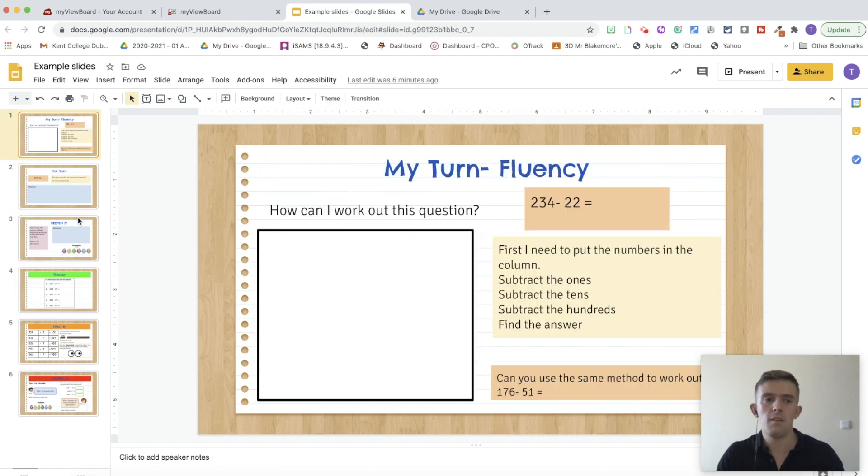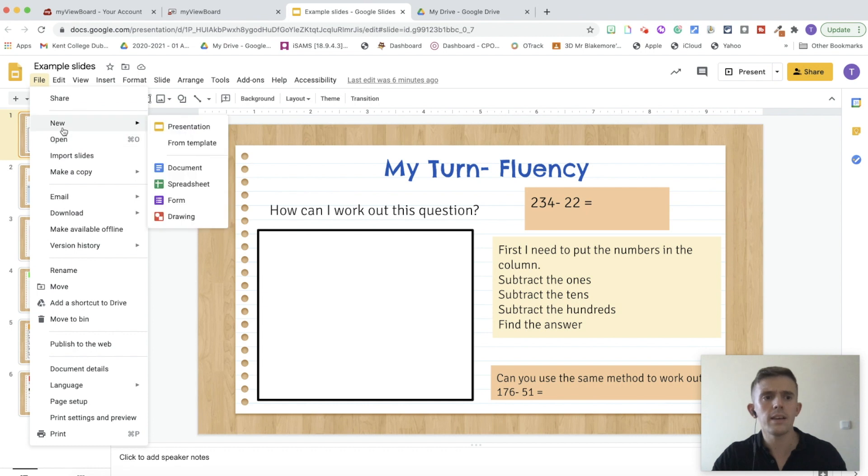Now, one of the problems I have, which is where I then need a whiteboard, is if I'm sharing this with the learners, we've got 234 subtract 22. Well, how can I work this out? I want to model how to work this mathematical question out, but I cannot do that. So, that's where this becomes useful. Now, if I go into file, I can then download this as a PDF.